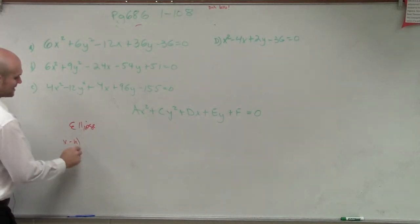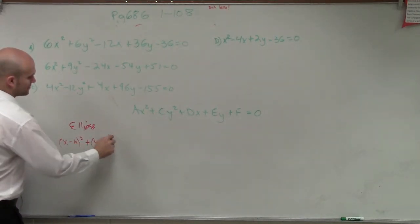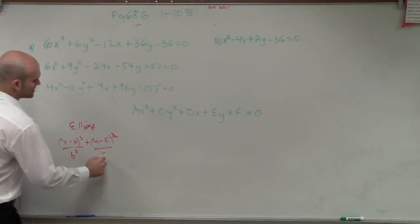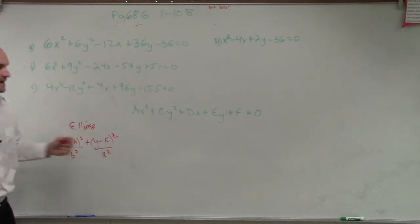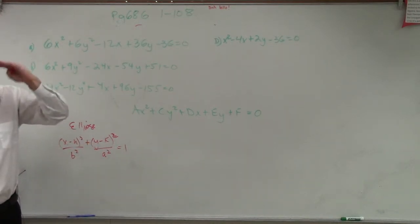Ellipse, if you guys remember, (x minus h) squared plus (y minus k) squared - and let's just do b squared over a squared. All right, this would be - and that equals 1. This would we know that is going to be an ellipse with a vertical major axis of symmetry.